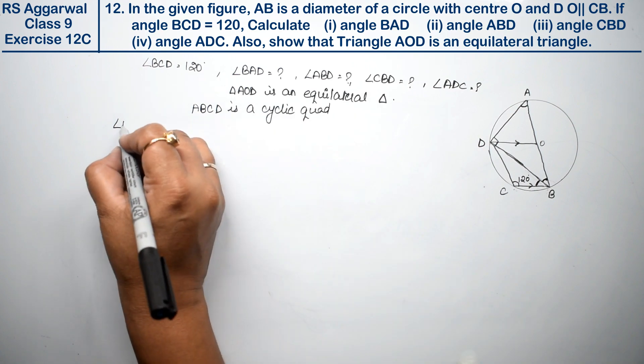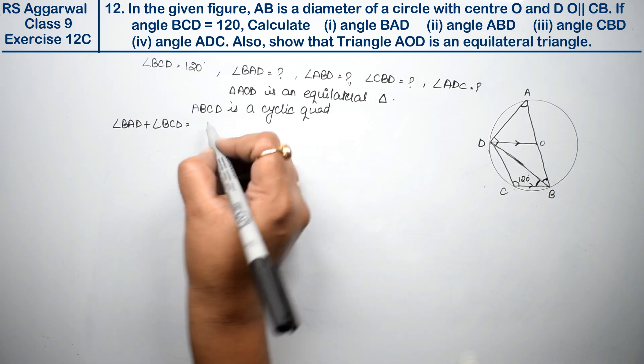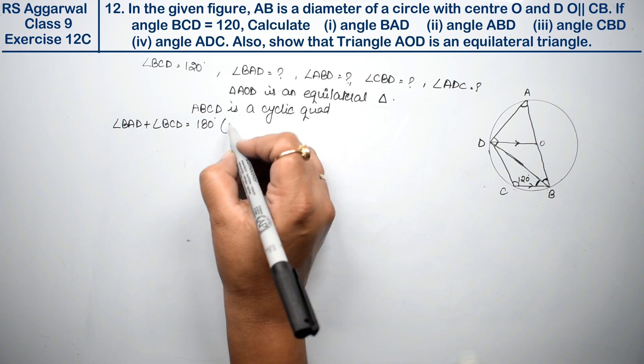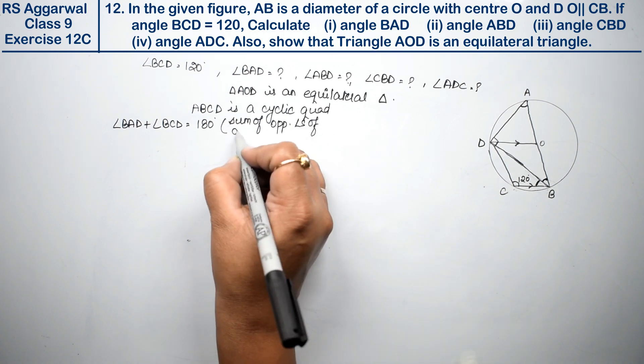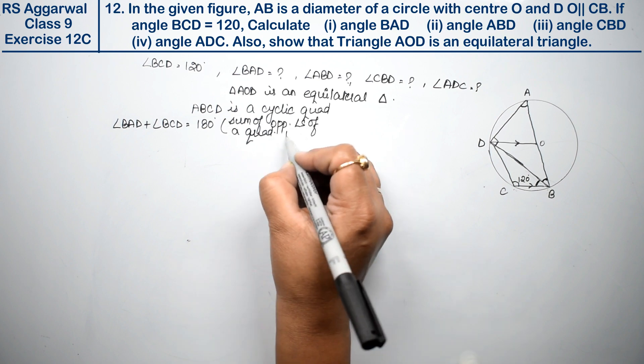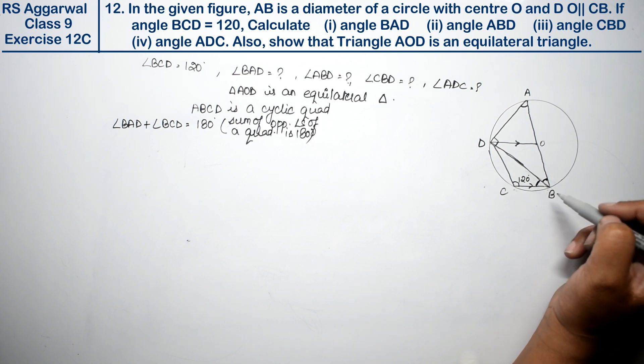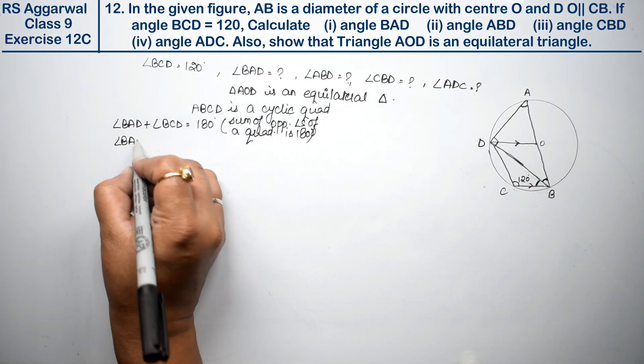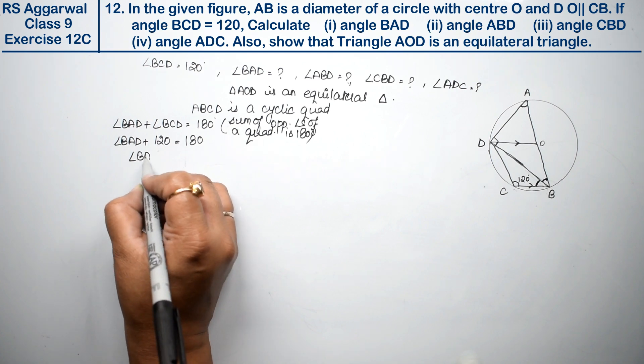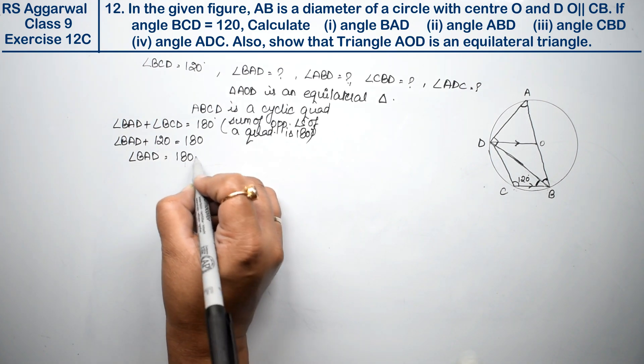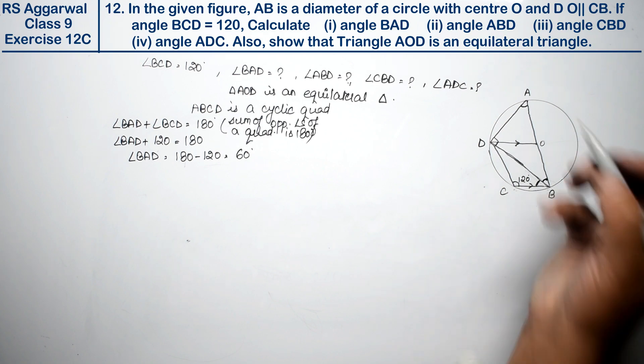In a cyclic quadrilateral, opposite angles sum to 180 degrees. So angle BAD plus angle BCD equals 180 degrees. Since BCD is 120 degrees, angle BAD plus 120 equals 180. Therefore, angle BAD equals 180 minus 120, which is 60 degrees.